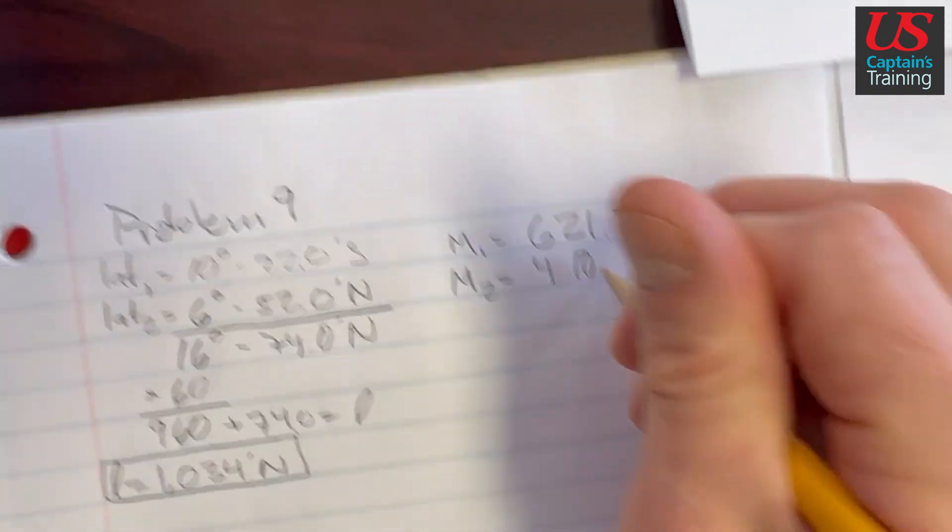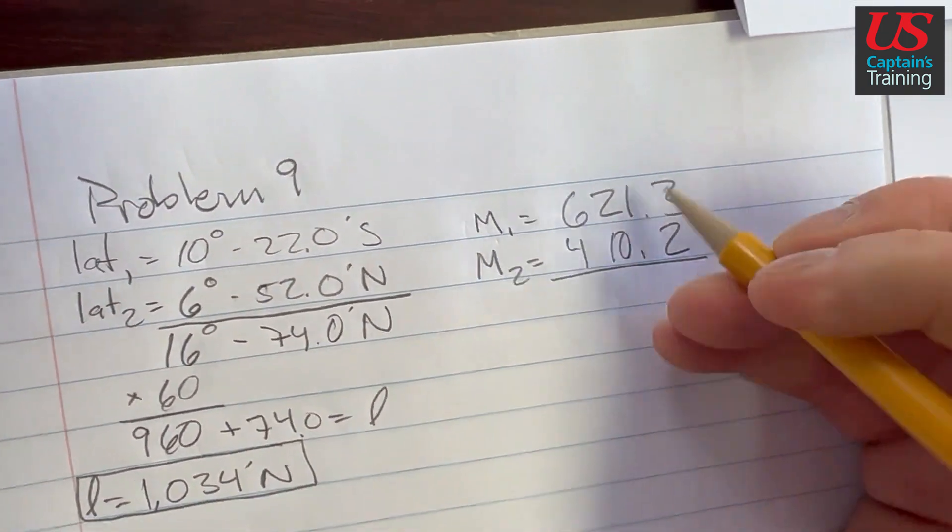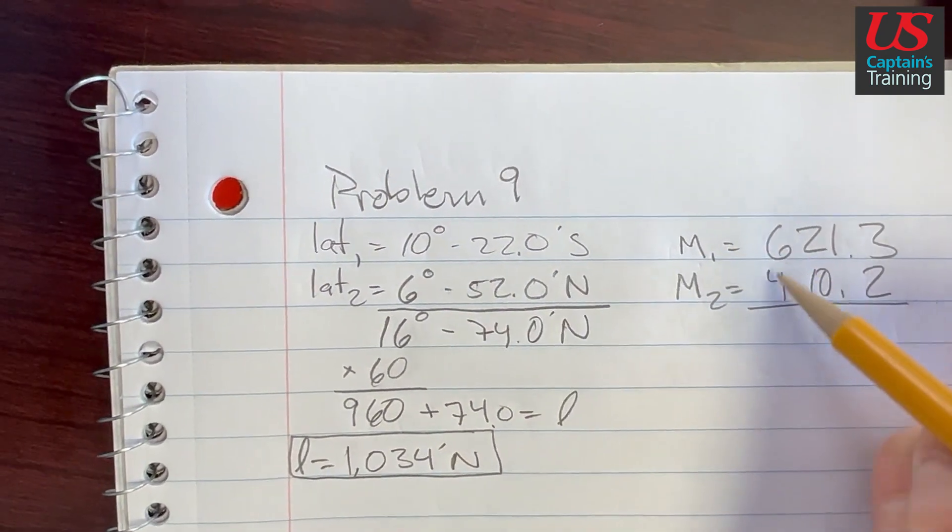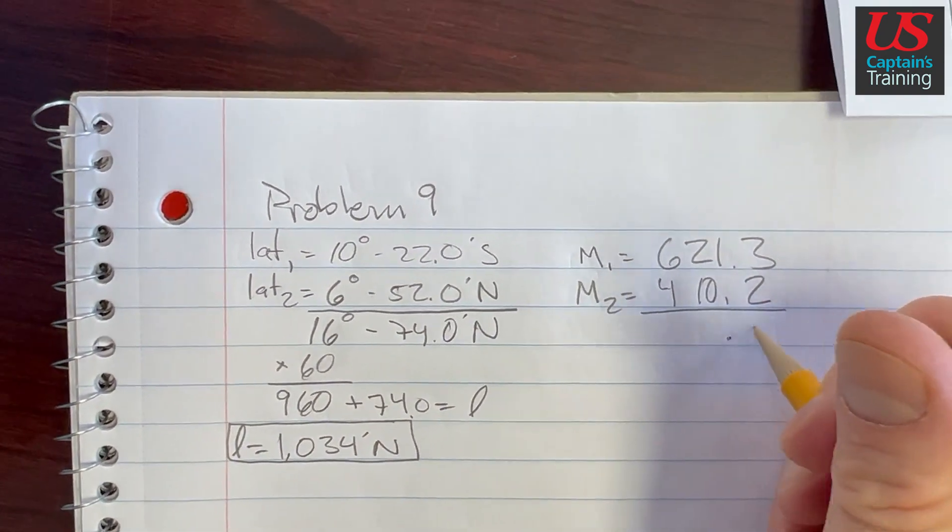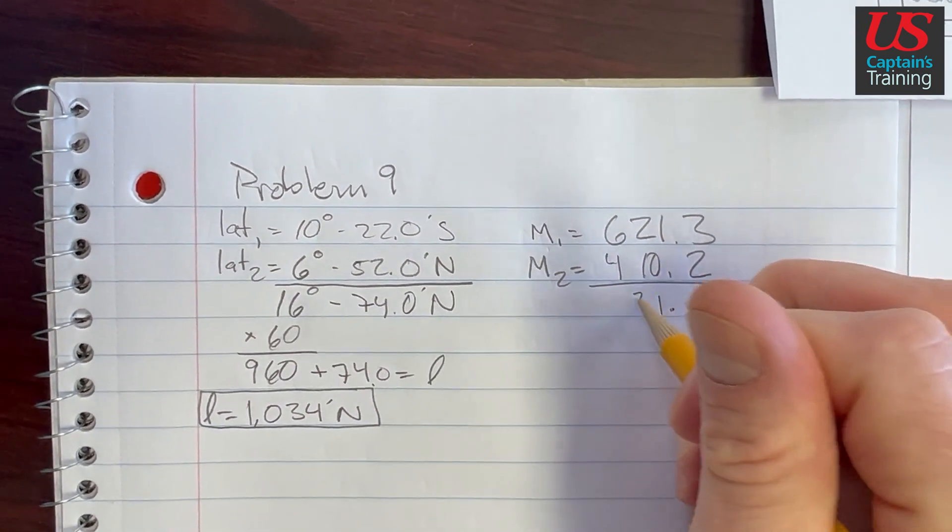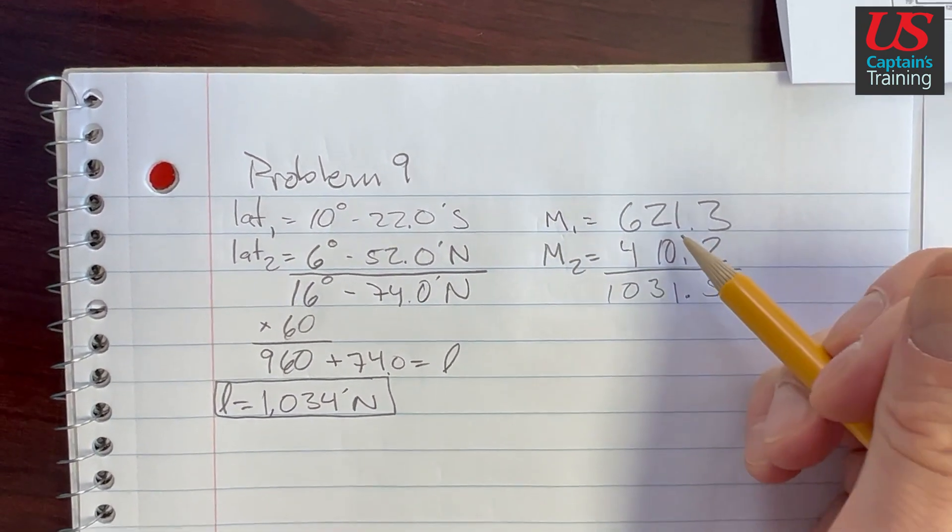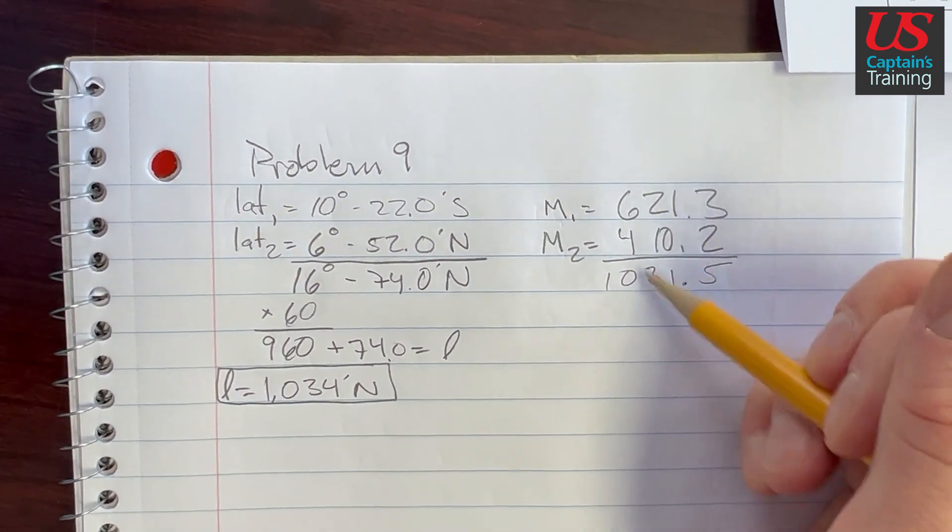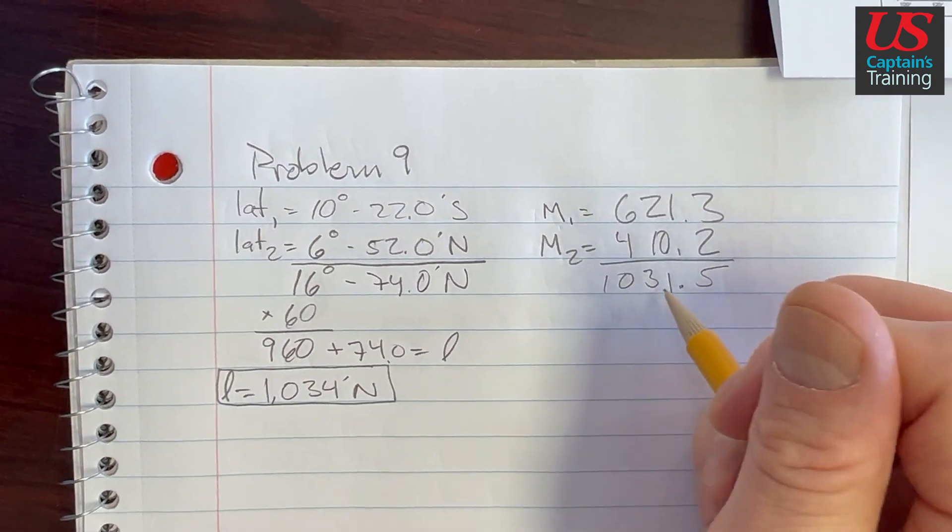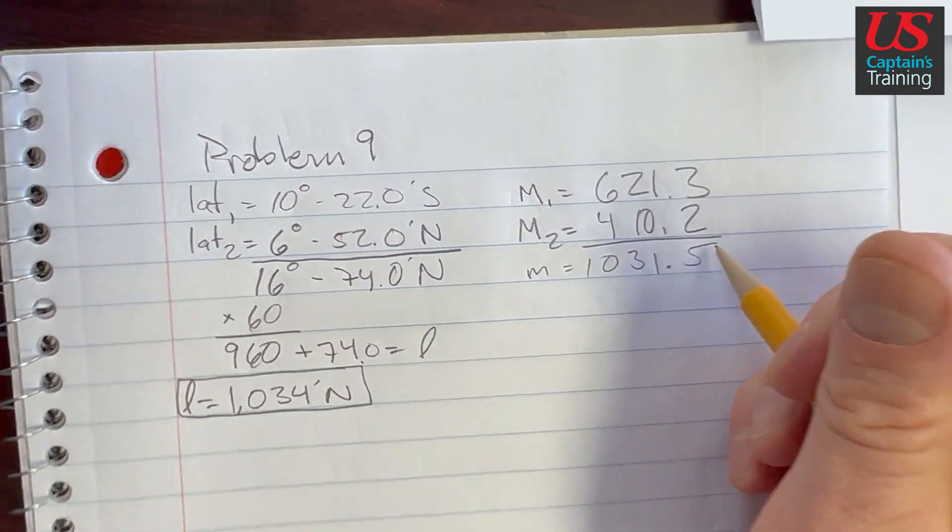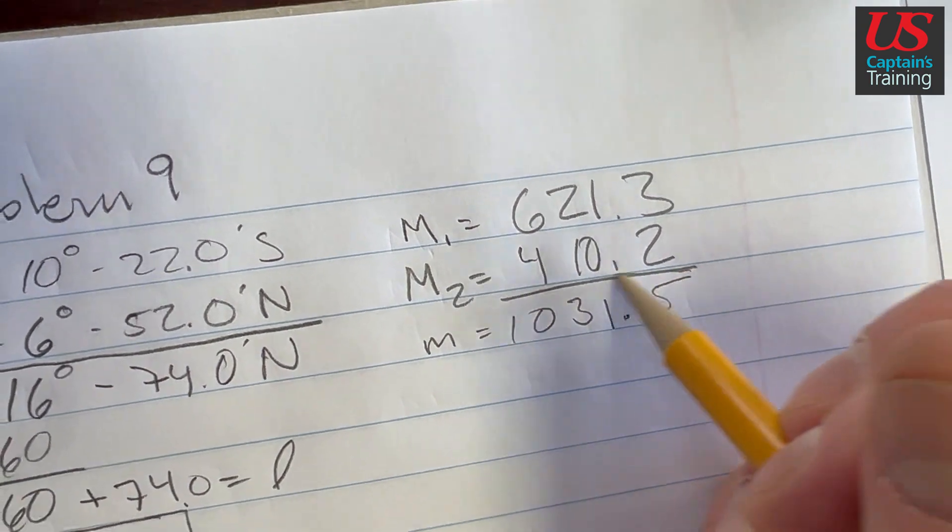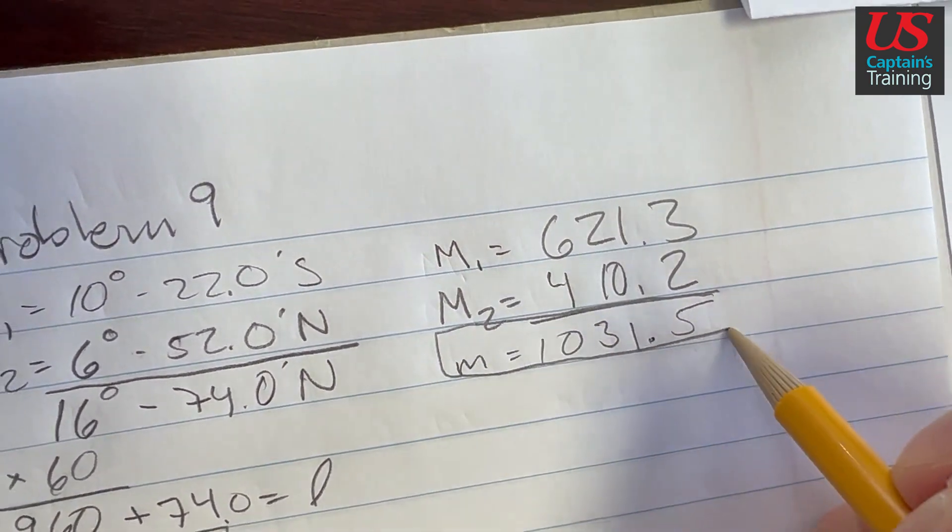And now be careful here because we added these. So we have to add these. So we get 1031.5. Good. So our little m is equal to the difference between these two. But since we crossed the equator, we're adding them. So the difference is here.